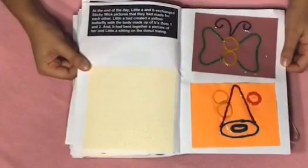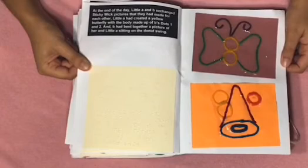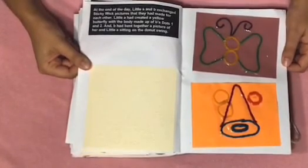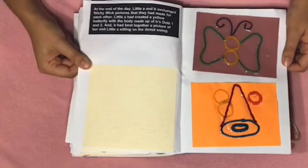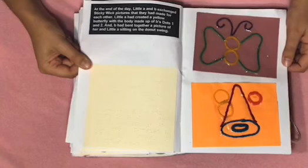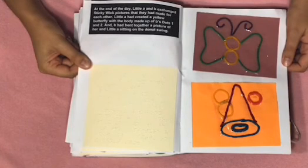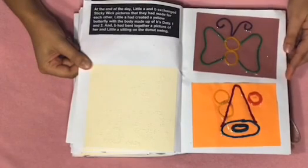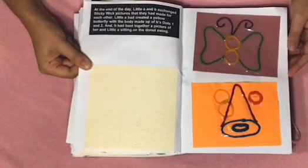At the end of the day, Little A and B exchanged sticky wick pictures that they had made for each other. Little A had created a yellow butterfly with a body made up of B's dots, one and two. And B had bent together a picture of her and Little A sitting on the donut swing. On the top, we have Little A's picture, and on the bottom, we have Little B's picture.